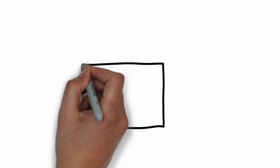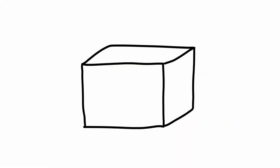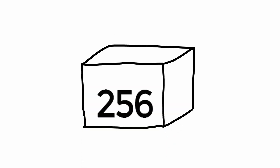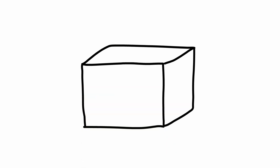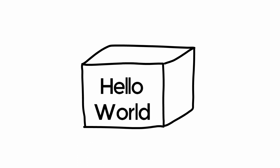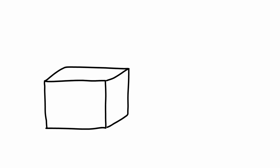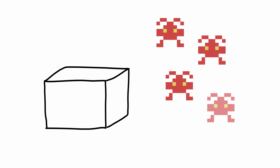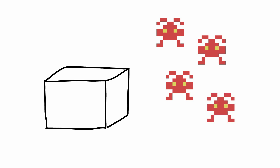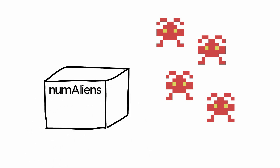You can think of variables as storage boxes in the computer's memory. Your software can then put data, numbers, words, or whatever else it wants to store into this box. So say we wanted to keep track of how many aliens were currently on the screen - we can create a box to store this number but we need to give it a label so that we know what that number means. So in our example we now have a variable named numAliens and we can put the value 4 in there.